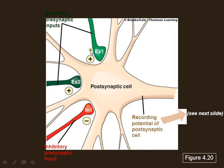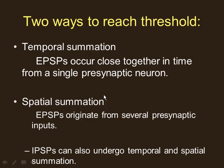Spatial summation is all kinds of areas around a neuron firing at one time. The big difference: temporal summation is one neuron firing at high frequency, while spatial summation is one snapshot in time with lots of neurons firing simultaneously. Summation literally means adding — either you're adding action potentials from one neuron over time, or you're adding action potentials from many neurons at once.